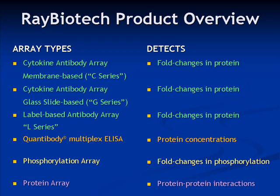For researchers who need quantitative analysis, RayBiotech's answer is Quantibody. This array accurately measures the concentrations of multiple cytokines from one sample. We have also developed phosphorylation arrays, which enable you to detect multiple phosphorylated proteins from a single sample. RayBiotech's protein array detects protein-protein interactions or protein-small molecule interactions. Both the phosphorylation array and the protein array are discussed in detail in a separate video.